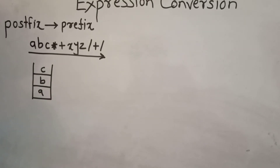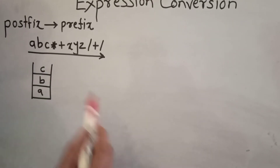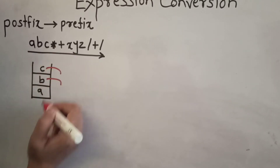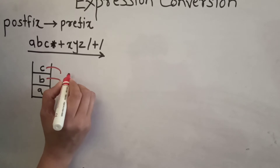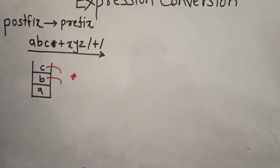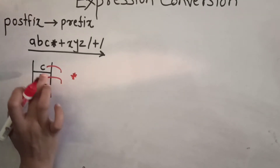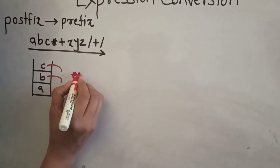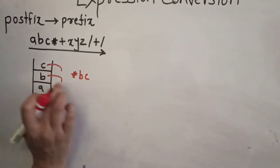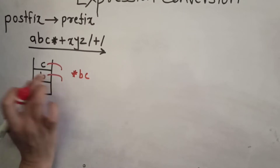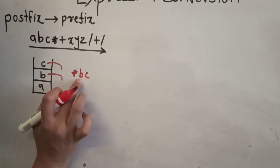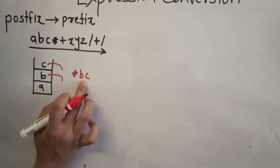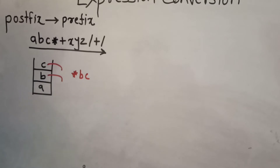Now the multiplication operator is encountered. Whenever an operator comes, we delete the topmost two operands from the stack — that means C and B are deleted. Our operator is multiplication, and since we are converting to prefix format, the operator must be at the first position. So multiplication comes first, then B, then C — giving us *BC (not *CB). Note that the first deleted operand goes to the last position and the second deleted operand goes to the middle position. This expression *BC is then pushed back onto the stack.